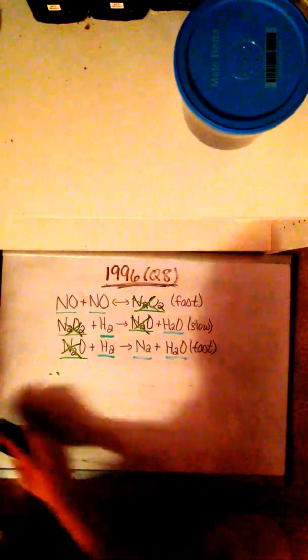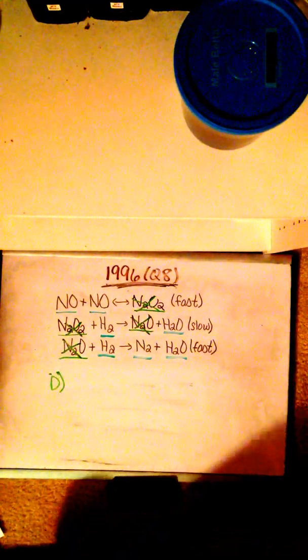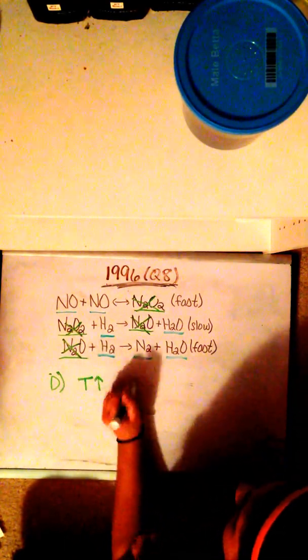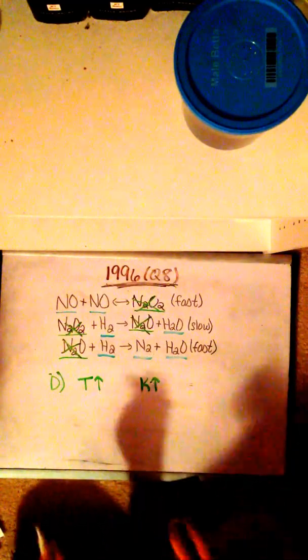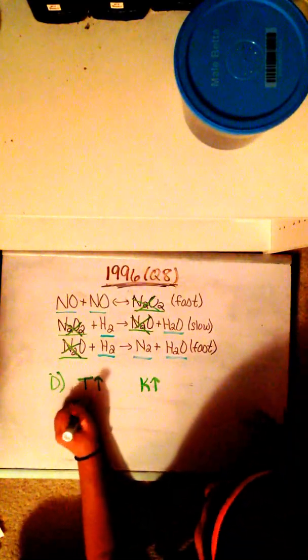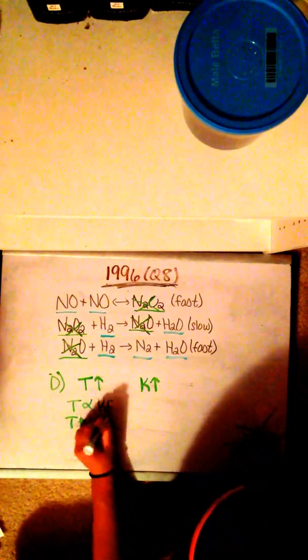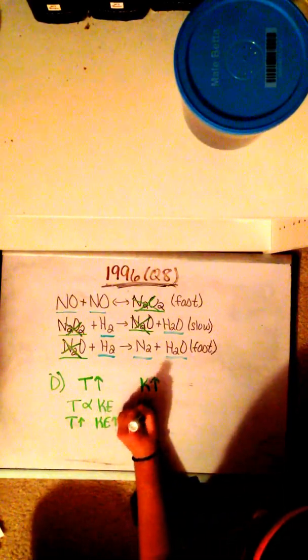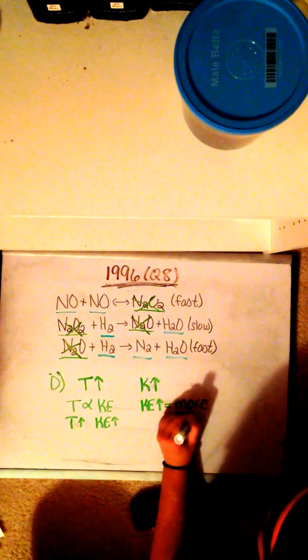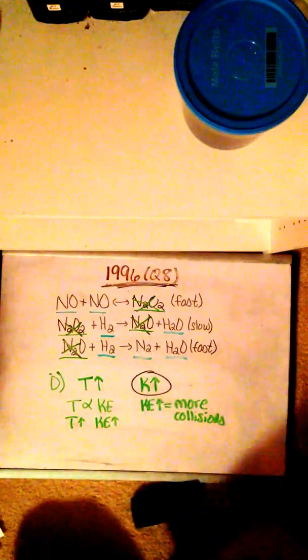Finally, we have part D. Part D asks us to explain why an increase in temperature would also increase rate constant K. So we have an increase in temperature and we want to prove an increase in K. So, first we have to note that temperature is directly proportional to kinetic energy. So that means as temperature increases, kinetic energy increases. So as kinetic energy increases, we can conclude that there would be more collisions in the container. More collisions automatically means an increase in rate constant K.